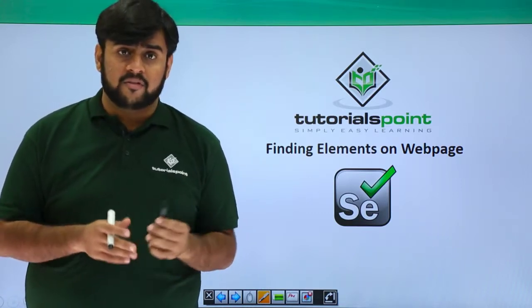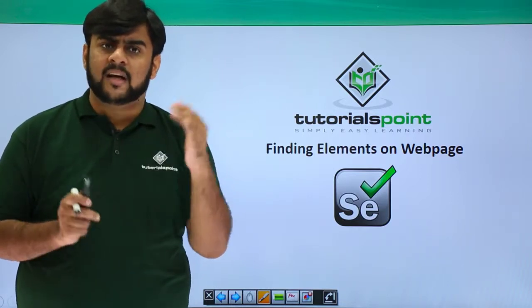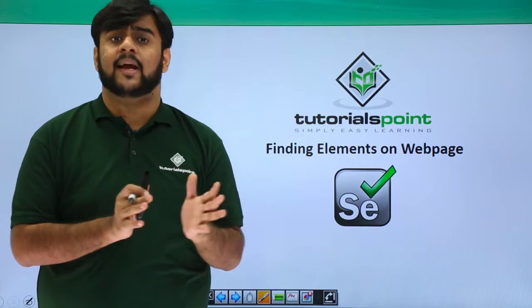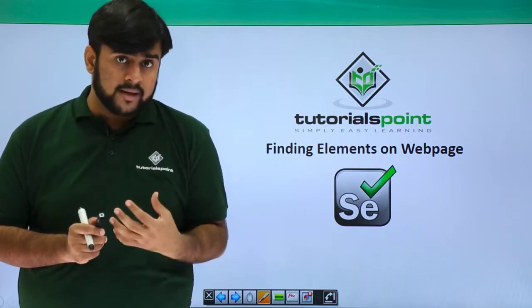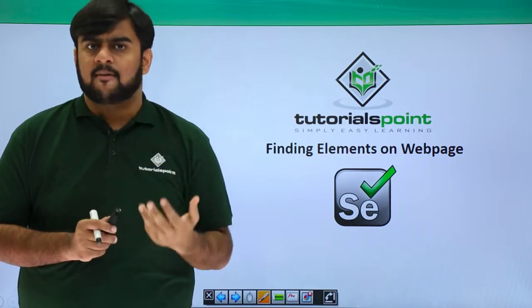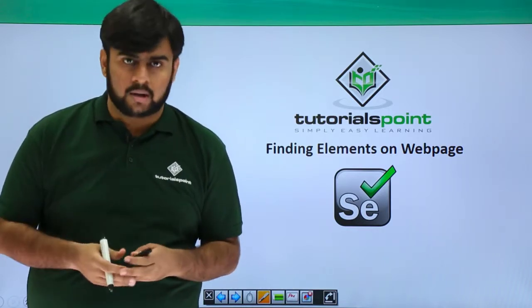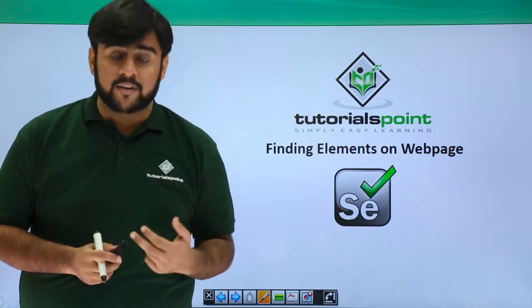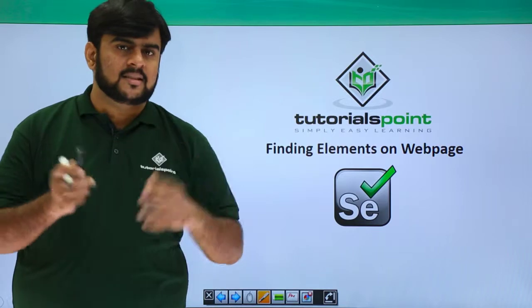What are the ways in which we can actually find an element or locate an element? We have already seen how our locators look like and how do they work. But when we are using WebDriver with Java, how can we call them? We have precisely two ways of finding an element in our web page. Let's see them one by one.